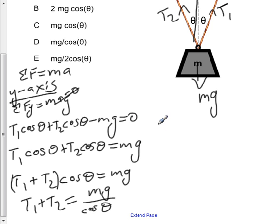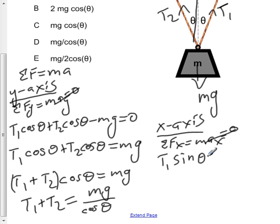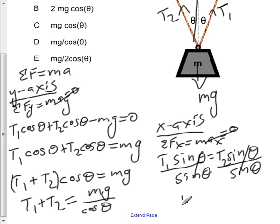For the x-axis, we'd have the sum of all the forces in the x-direction. Our system is in equilibrium, so the acceleration in the x-direction is zero. If we apply SOHCAHTOA using sine of theta, we'd have T1 sin θ equals T2 sin θ. Canceling these out gives us T1 equals T2.